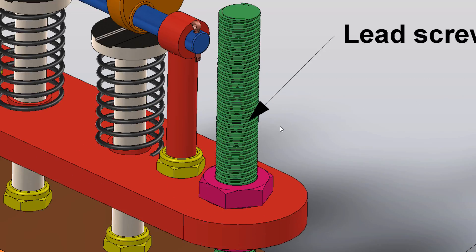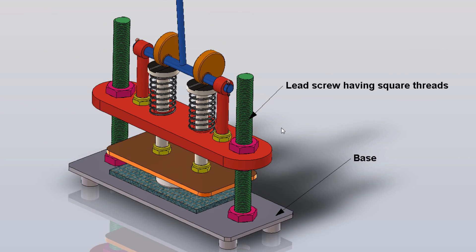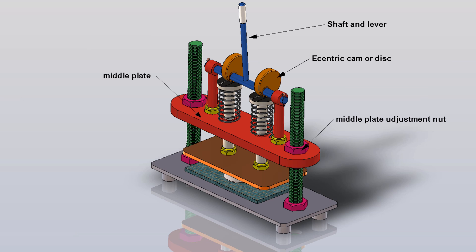It consists of two vertical lead screw columns. The middle plate remains fixed during operation, but its height can be adjusted using nuts. The handle lever oscillates about the fixed middle plate.